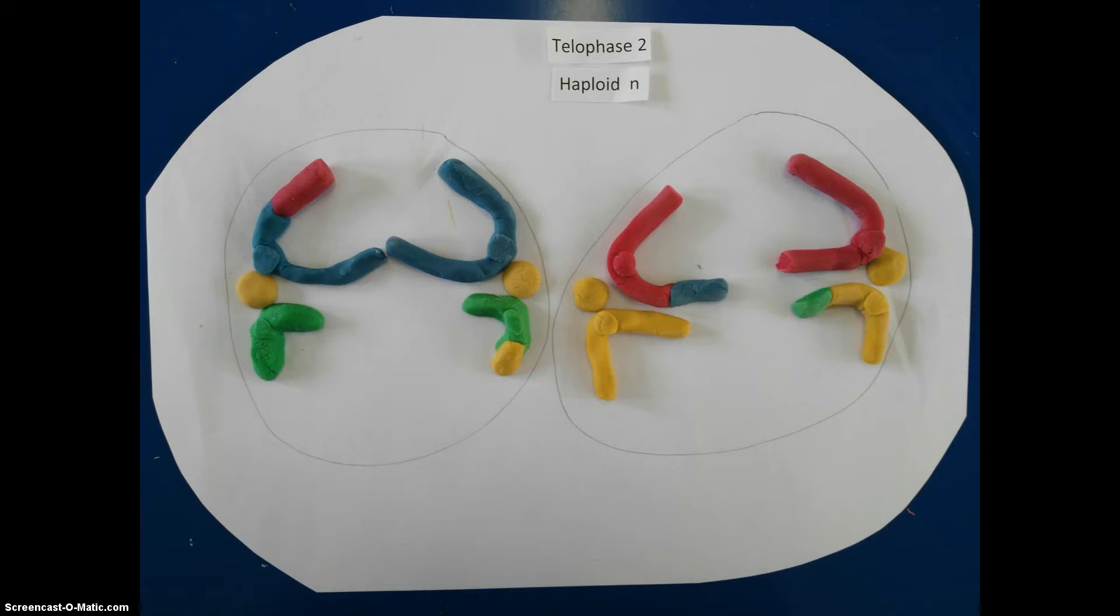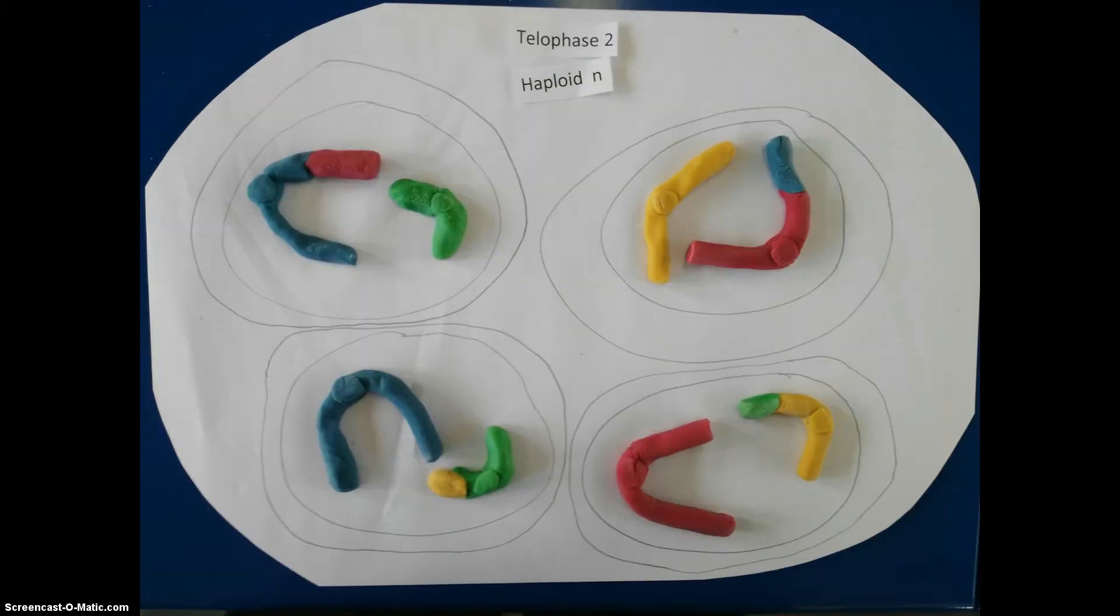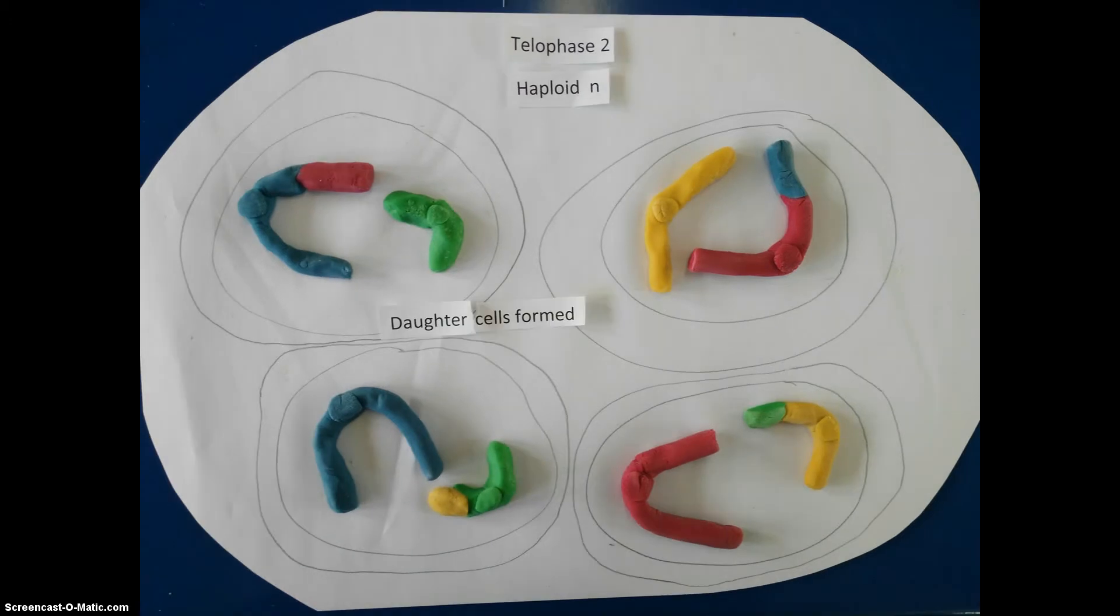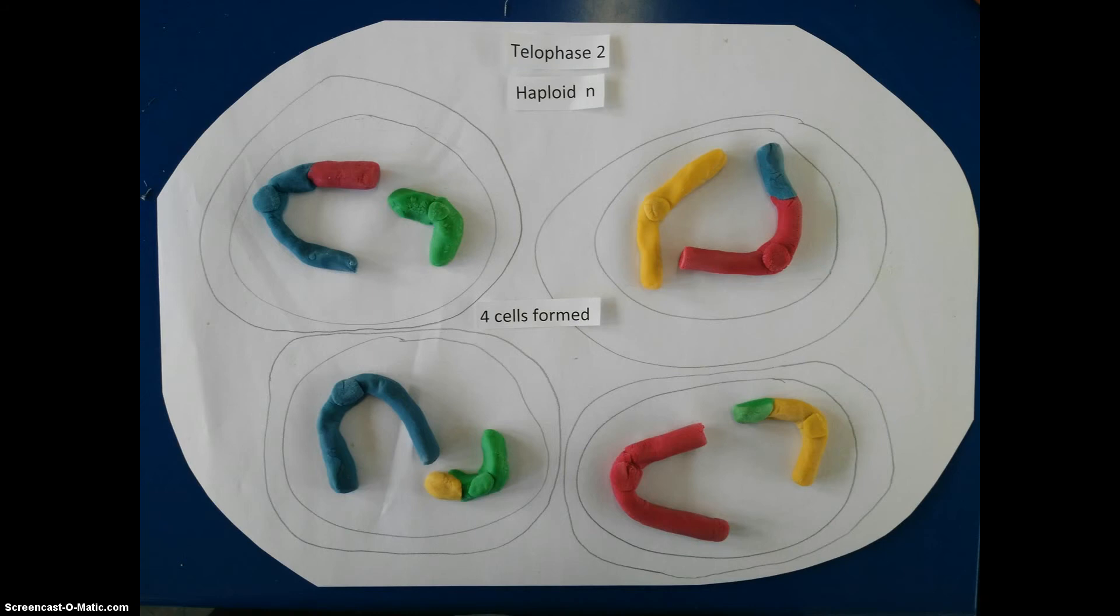In telophase 2, the daughter chromosomes reach the poles and a new nucleus forms. The cell membrane of each cell constricts and the cytoplasm divides into two cells. Four haploid daughter cells are formed from the original individual cell, each varying in their genetic information as well as only having half the number of the original number of chromosomes.